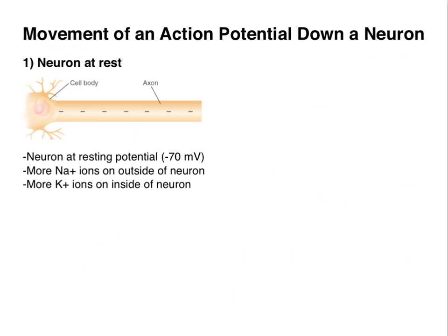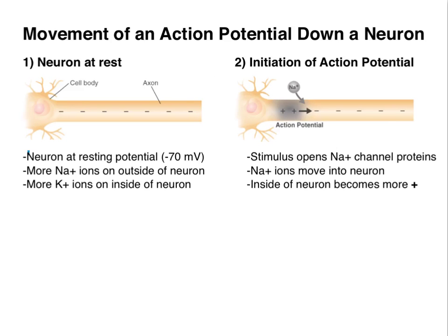Imagine a neuron at rest. The inside of the cell is negative compared to the outside, which is positive. The resting potential will be somewhere around negative 70 mV, with more sodium ions on the outside and more potassium ions on the inside. When we initiate that action potential, a change in voltage across the cell membrane will also induce a current to form on the inside of the cell.